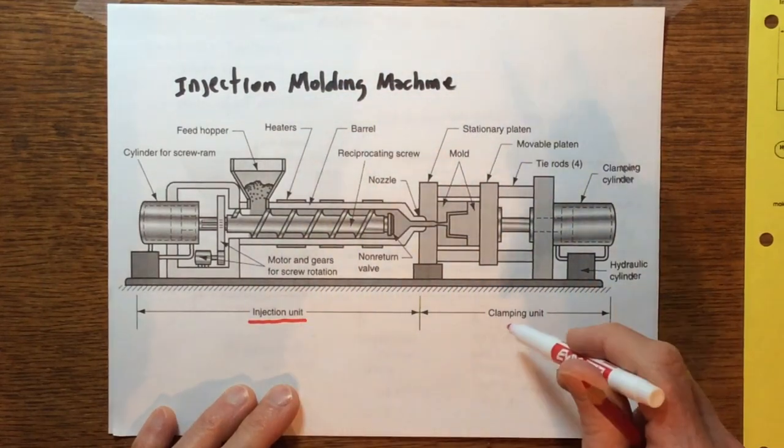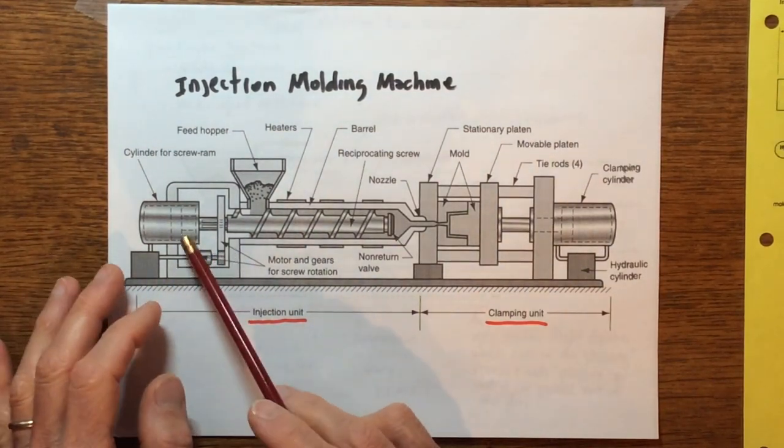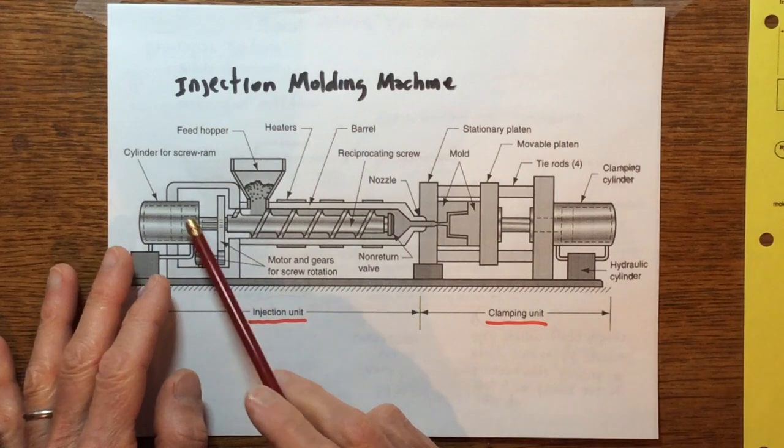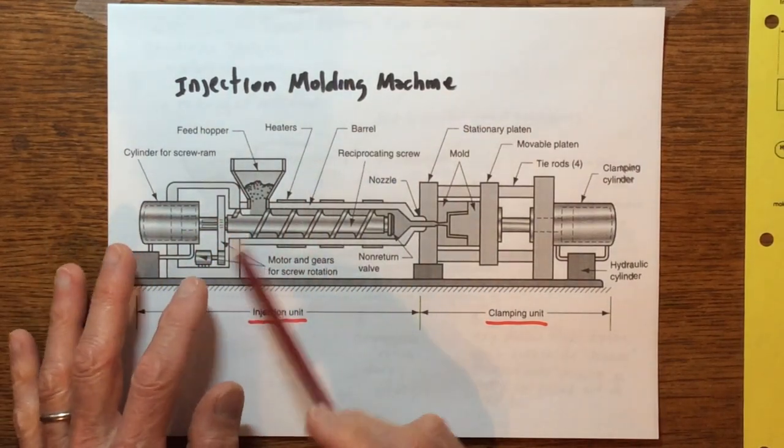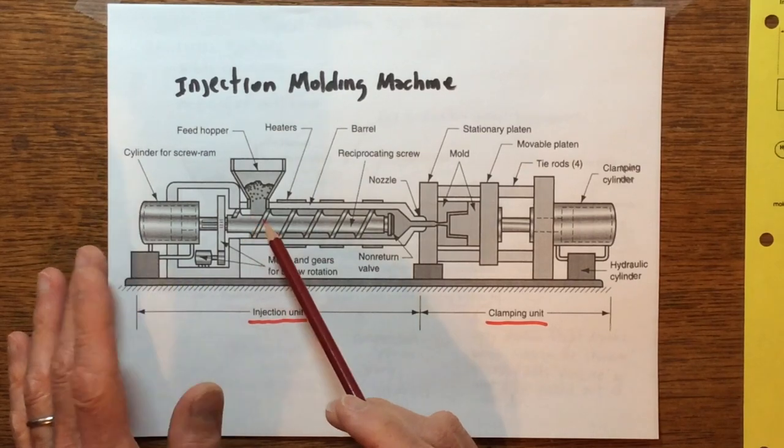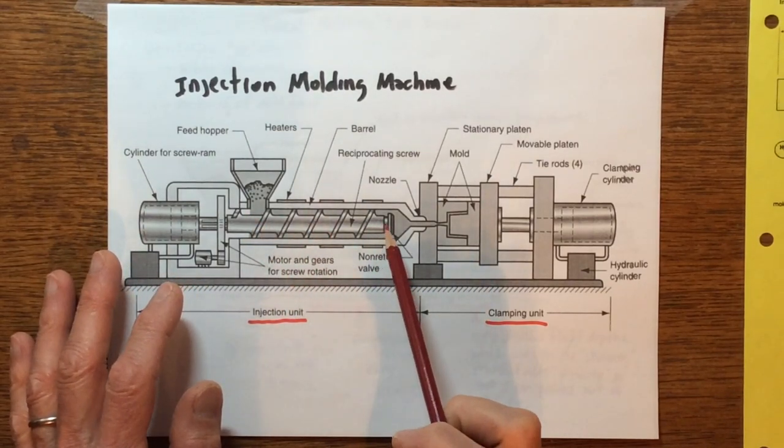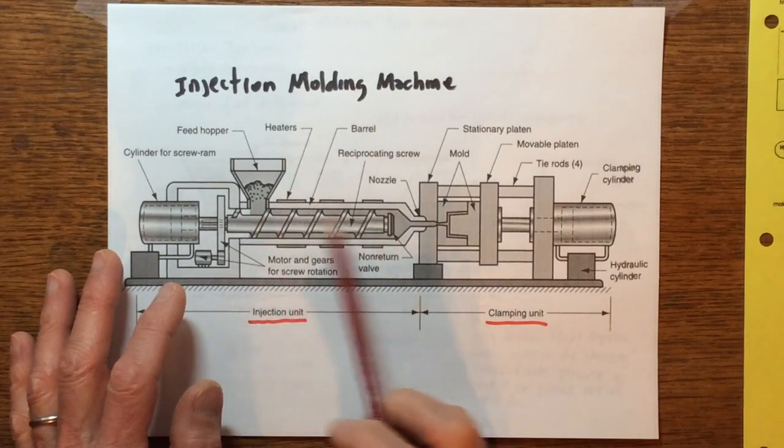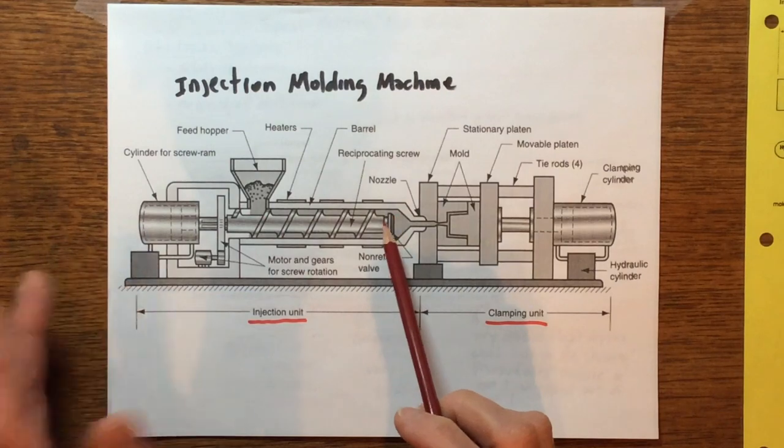Of course we have two separate areas, one's called the injection unit and then it's called the clamping unit. So let's start down this side. What we have here is we have to have some kind of motor obviously turn this screw, and this is not as good of a depiction of a screw as what was in the previous extruder, but nonetheless it's similar geometry.